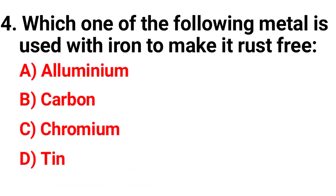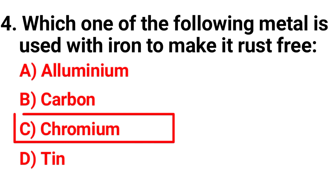Question 4: Which one of the following metals is used with iron to make it rust-free? Option A: aluminium, B: carbon, C: chromium, D: tin. The correct answer is option C — chromium.